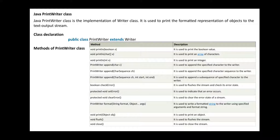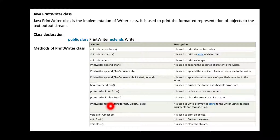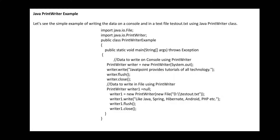Java PrintWriter class is the implementation of the Writer class. It is used to print formatted representations of objects to the text output stream. The class declaration is: public class PrintWriter extends Writer. It extends Writer and is used to accept information and write to the output screen.